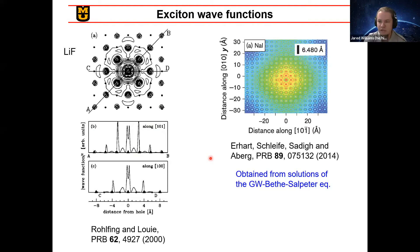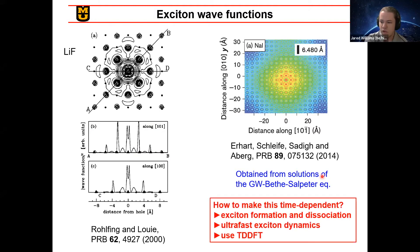And these are obviously very nice, but there are two issues that we were hoping to get around with what we're doing. First, these are obviously static images, which means you can't look at things like dynamics very well, formation, dissociation, that kind of thing. And also, these were obtained using the GW Bethe-Salpeter equation, which is somewhat computationally expensive to do. So we wanted to use TDDFT in order to bump up that efficiency as well.